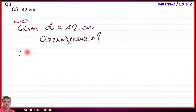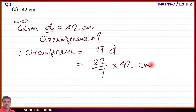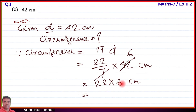Since circumference formula is: circumference C equal to pi times d. Substituting pi equal to 22 by 7 and d equal to 42 cm: C equals 22 by 7 into 42 cm. 7 cancels into 42 giving 6, so C equals 22 into 6 cm, which equals 132 cm. So the circumference of a circle with diameter 42 cm is 132 cm.